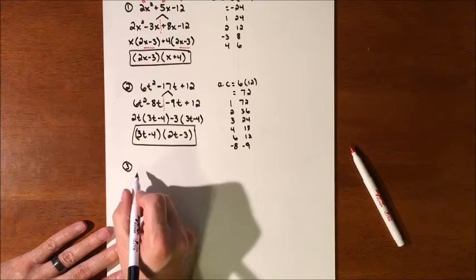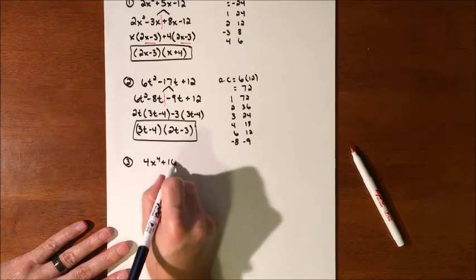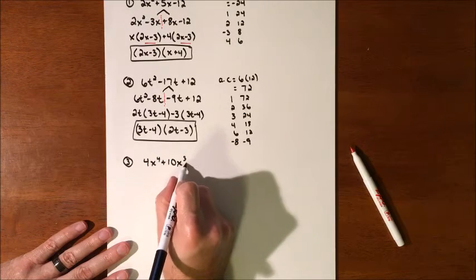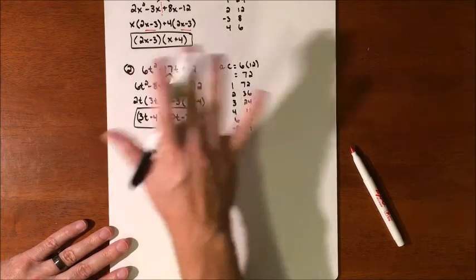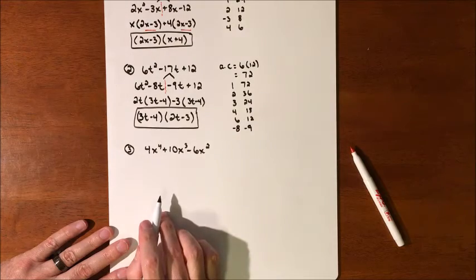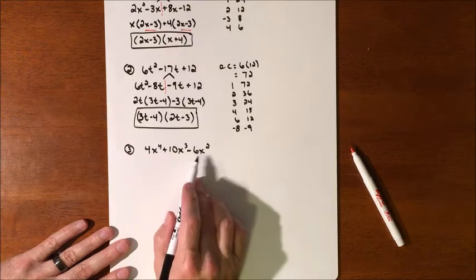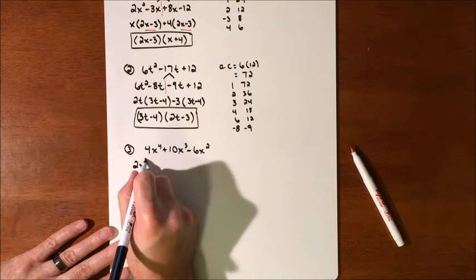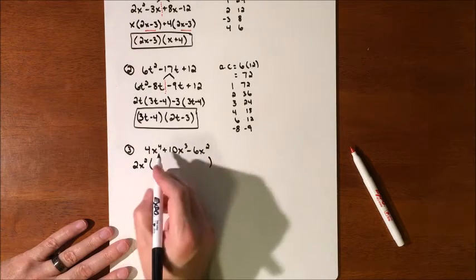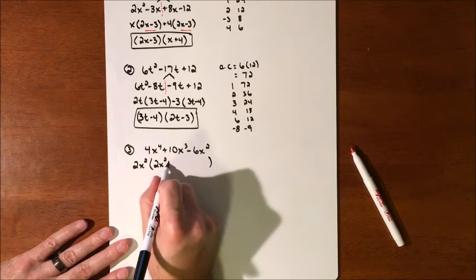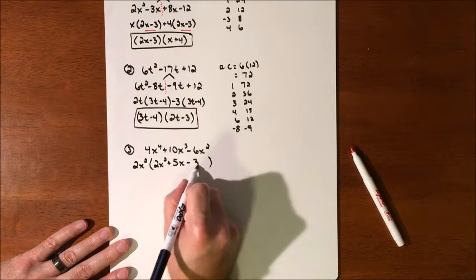Let's try one more. If we have 4x⁴ plus 10x³ minus 6x², the first thing we should always ask before we begin any process is: is there a greatest common factor we can take out? This one does — we can factor a 2x² out of every term, giving us 2x² times the quantity 2x² plus 5x minus 3.